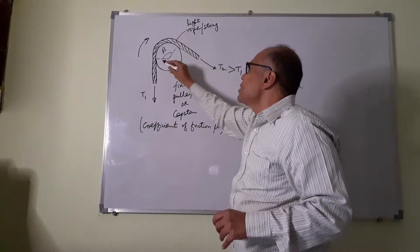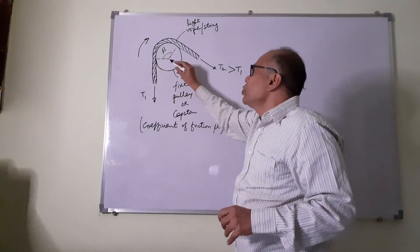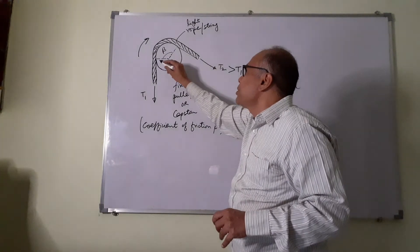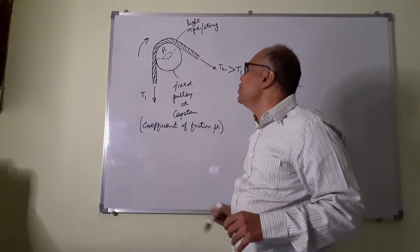The string subtends angle beta at the contact, the string which is in contact with the pulley, subtends angle beta with the center of the pulley.